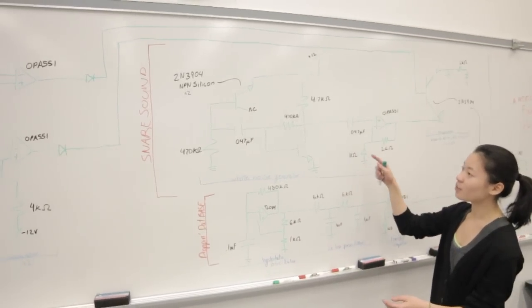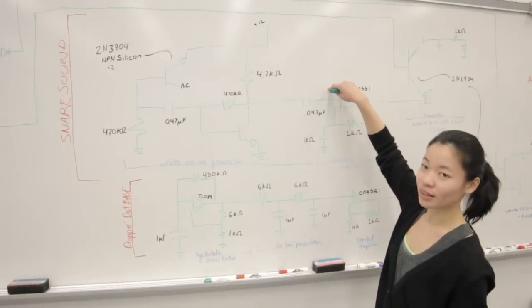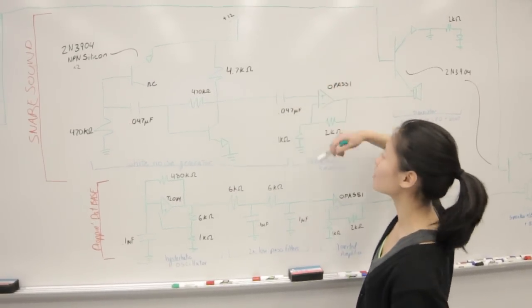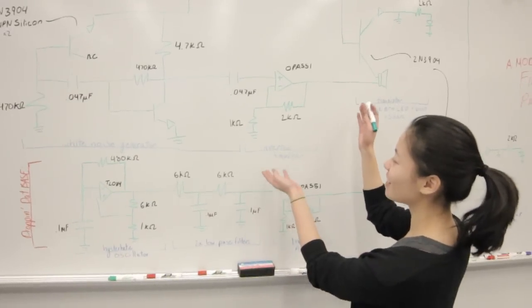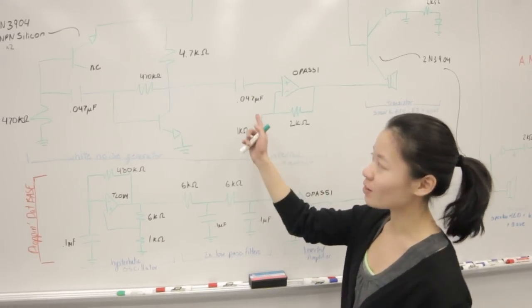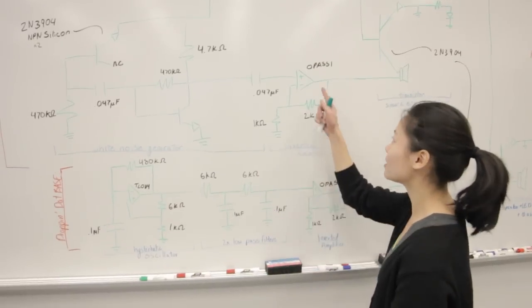Over here is where our white noise, if you actually read it with a scope, you will see the white noise, which is just fuzzy white noise. This right here is our non-inverting amplifier, which doubles the amplitude of the white noise that we have over here. So that just goes out there.